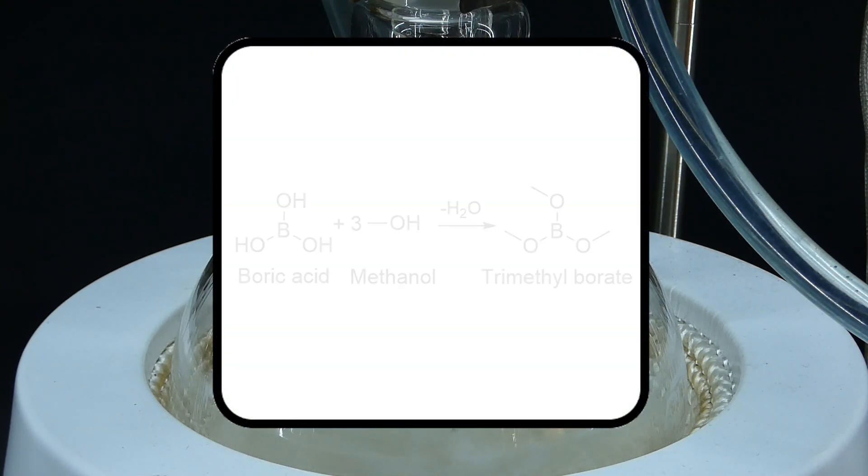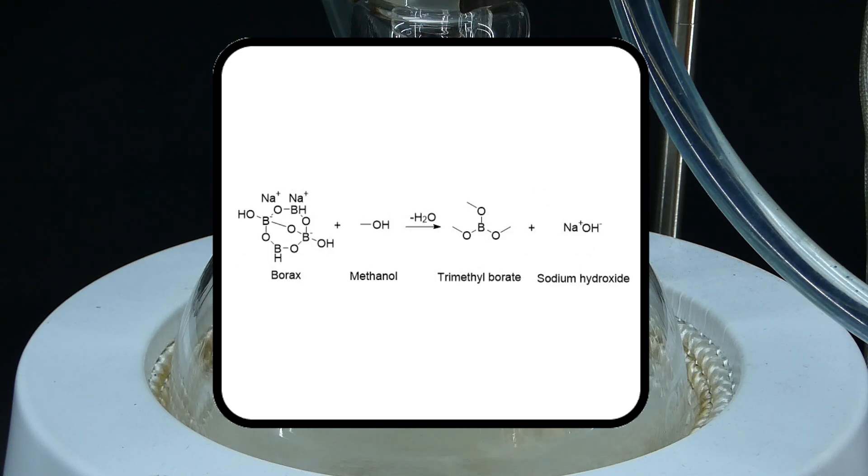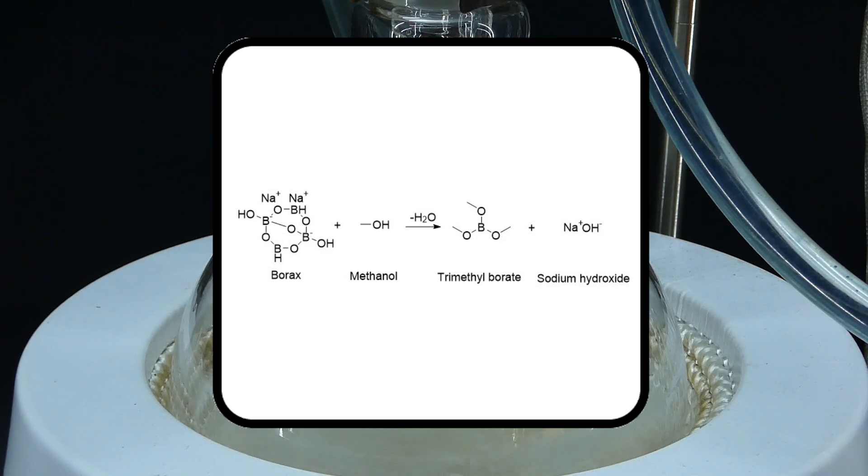The reaction of making trimethyl borate is really simple, and it basically involves taking the water out of the methanol and boric acid by the dehydration agent. This joins the molecules together and produces the desired trimethyl borate. If I would have used borax instead of the boric acid, the process would be similar, producing some sodium hydroxide as a byproduct.